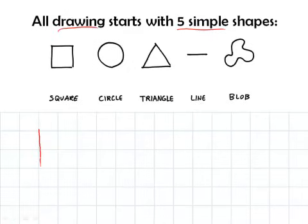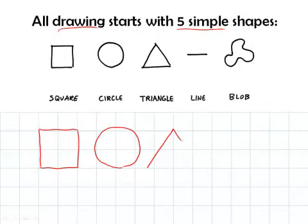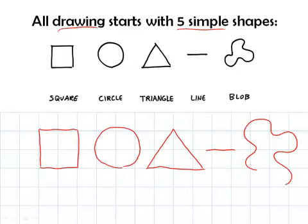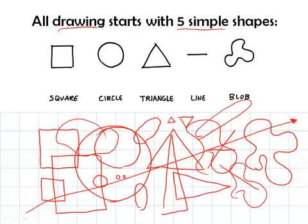Draw one with me. Let's draw a square. Now let's draw a circle. Now let's draw a triangle. Let's draw a line and let's draw some kind of a blob. Those are the five basic shapes. If we can draw just those, we can draw anything.